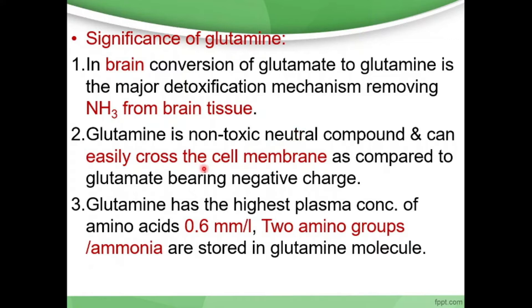Glutamine is a neutral compound and can easily cross the membrane, as compared to glutamate which bears a negative charge. Glutamate is an acidic amino acid, and therefore it is not easy for charged molecules to cross the membrane. Glutamine, being non-toxic and neutral, can easily cross the membrane. Glutamine has the highest plasma concentration of 0.6 millimole per liter, and two amino groups are stored per molecule of ammonia in the glutamine molecule.